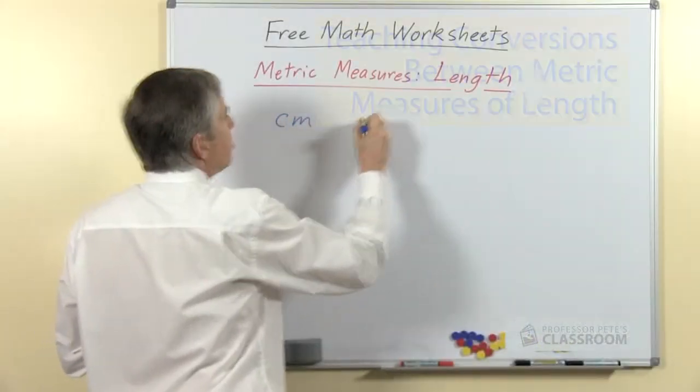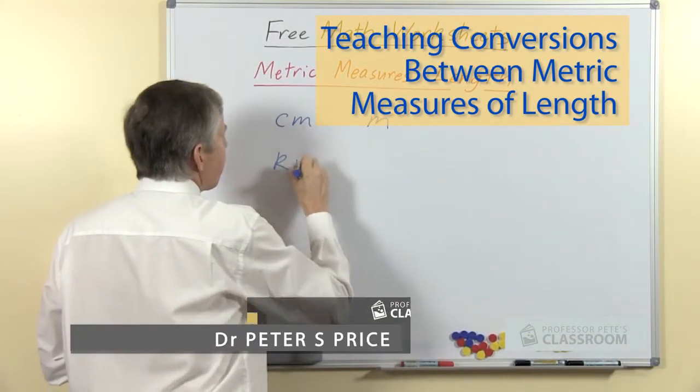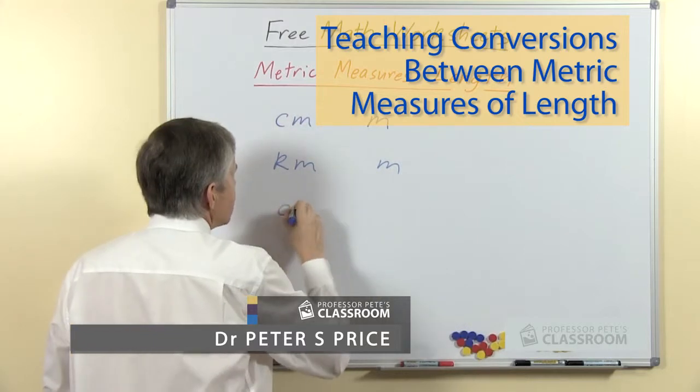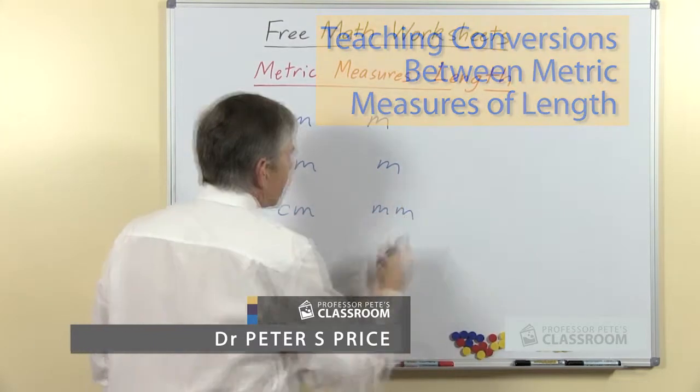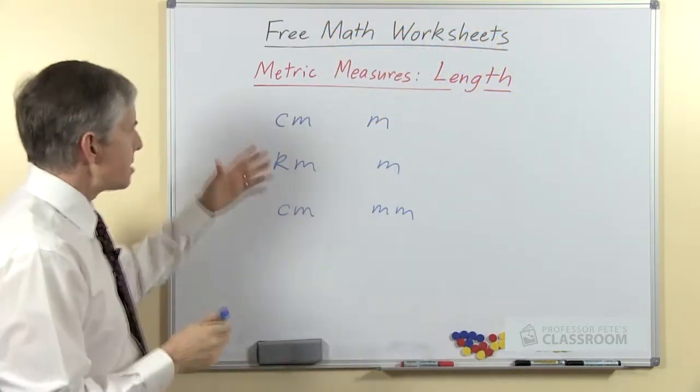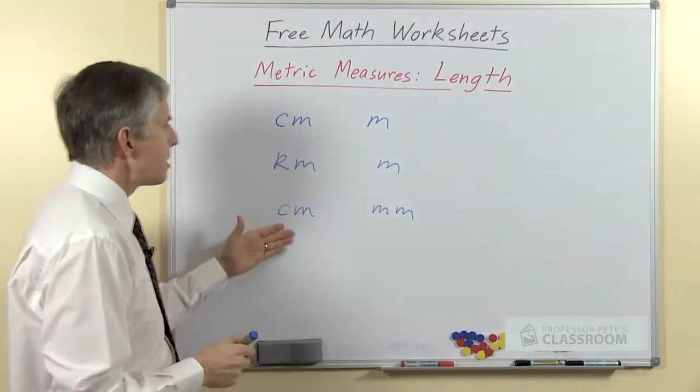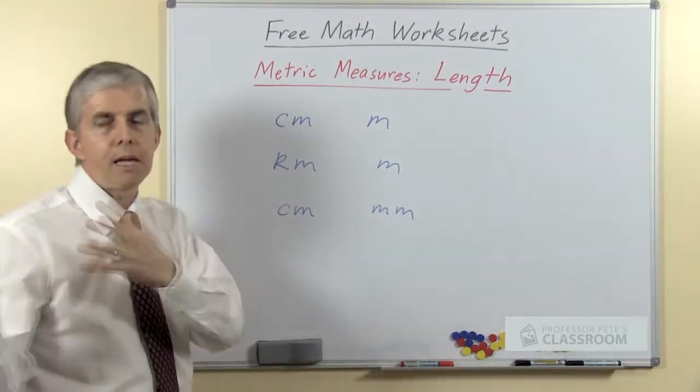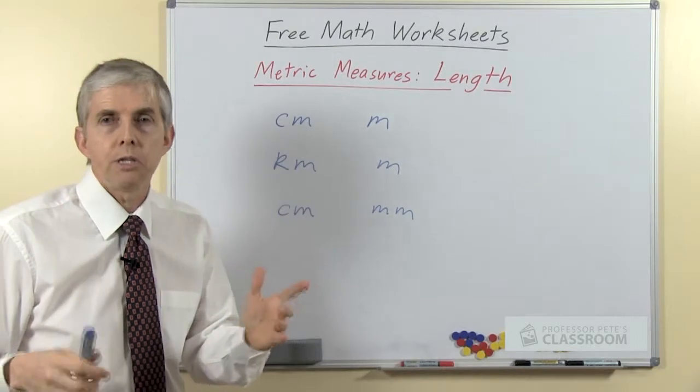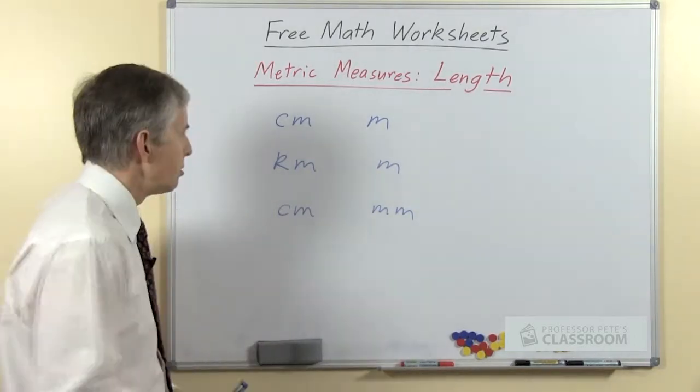Let's look at the units we're going to be converting. There are three pairs as I just mentioned: centimeters to meters, kilometers to meters, centimeters to millimeters and in the opposite direction. If you look through the worksheets you'll see I go in both directions.